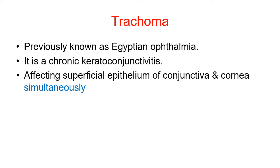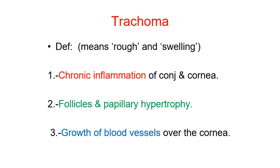Trachoma is a chronic keratoconjunctivitis affecting the superficial epithelium of the conjunctiva and cornea simultaneously. The word trachoma means rough and swelling. In trachoma cases, you can see chronic inflammation of conjunctiva and cornea, follicular and papillary hypertrophy, and growth of blood vessels over the cornea — called pannus. You should prepare a short note on pannus as well.